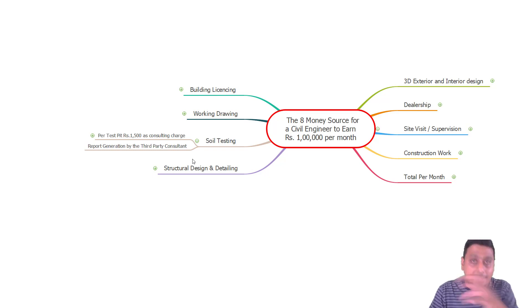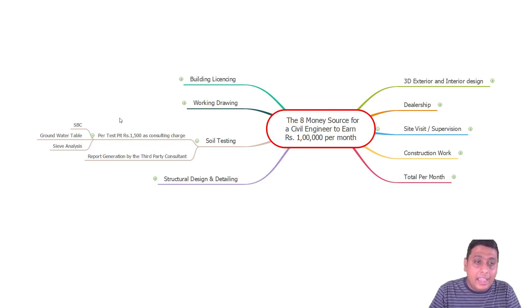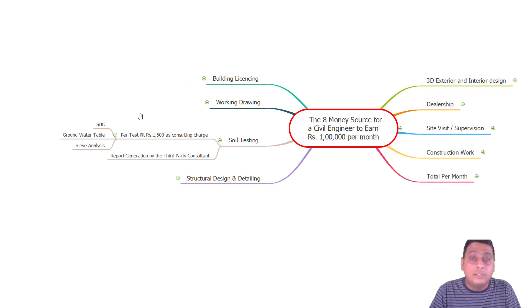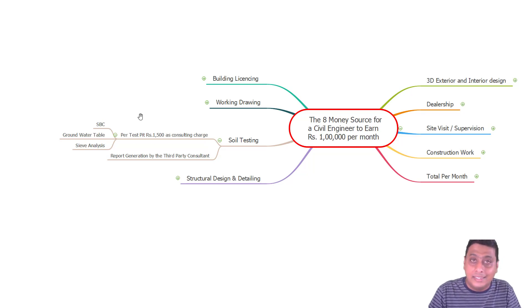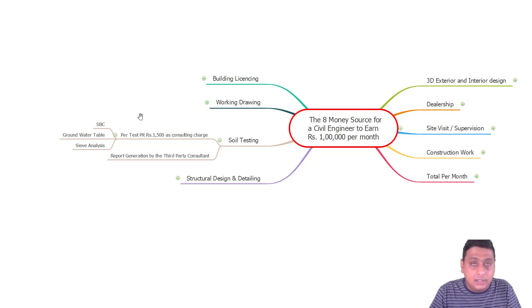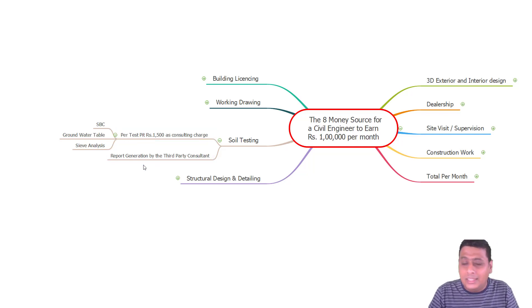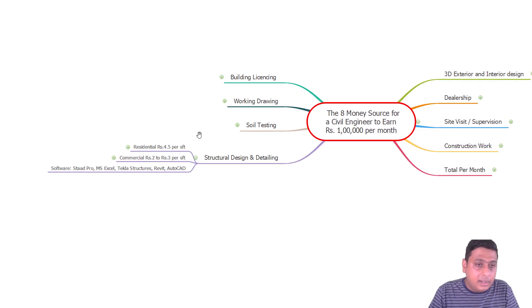For soil testing, we don't do the testing ourselves — we refer the client to a consultant in cities like Bangalore, Mysore, or Hassan, and we get a professional consulting referral charge of 1500 rupees per pit. Generally, a minimum of three to five pits are done for a residential or commercial building. On average, with two projects per month and six pits, you can earn 6000 to 7000 rupees per month. The reports generated include SBC, soil bearing capacity, groundwater table, and sieve analysis to determine soil type.